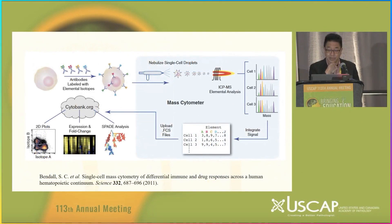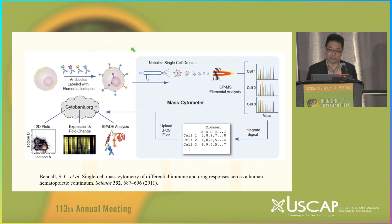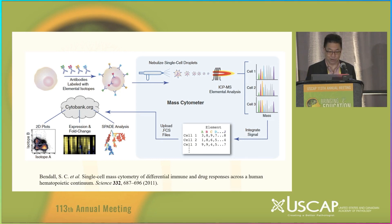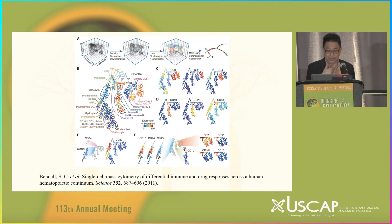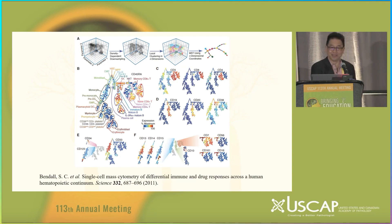Sean Bendall at Stanford developed a new idea called CyTOF — single cell mass spectrometry — where instead of a fluorescence tag, you tag with heavy metal ions. You nebulize the cells and run mass spectrometry. In this type of experiment you can use an almost infinite number of colors, because you have all these differently weighted ions for mass spec, and you don't have to worry about compensation. He used this to perform really high-resolution mapping of human hematopoiesis. Thank you very much.